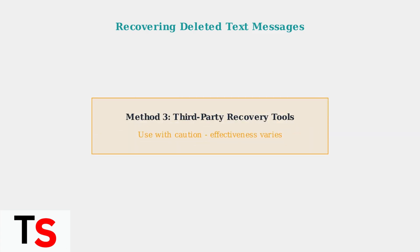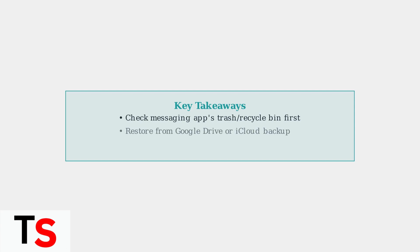Third-party data recovery tools exist, but their effectiveness varies significantly. If you choose this route, research and select reputable software carefully, as some tools may not work or could potentially harm your device. In summary, while Boost Mobile doesn't provide direct message recovery, checking your messaging app's trash folder and restoring from device backups are your most reliable options for recovering deleted texts.